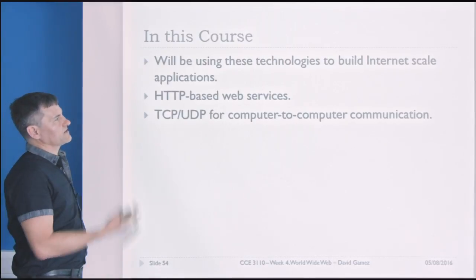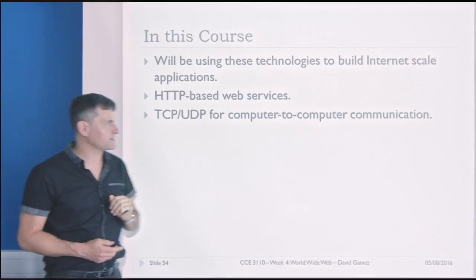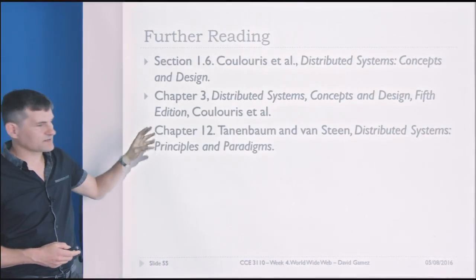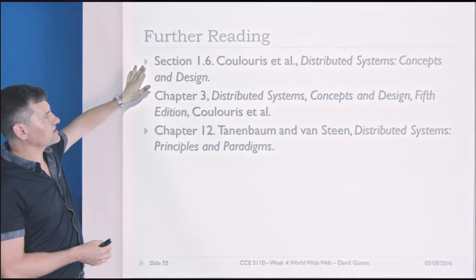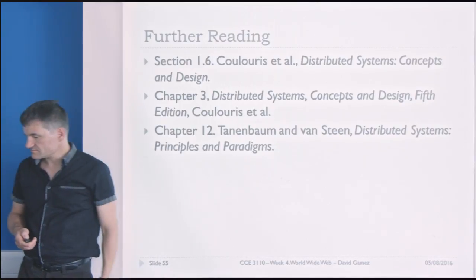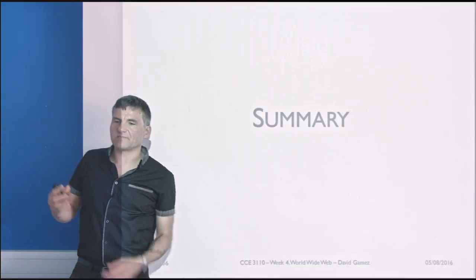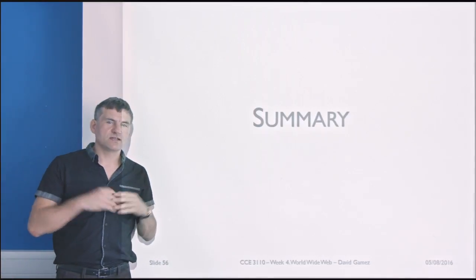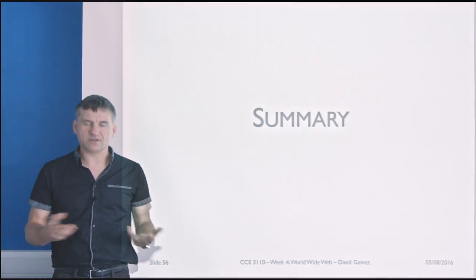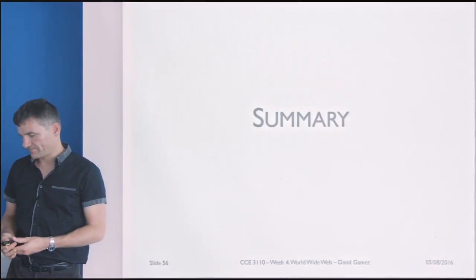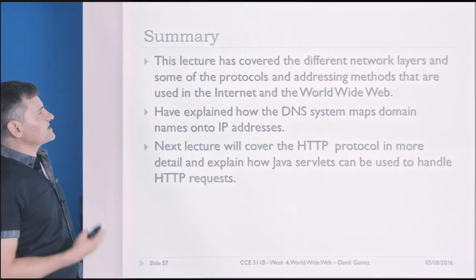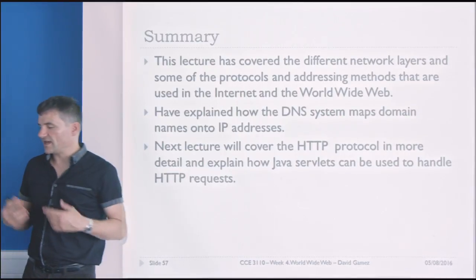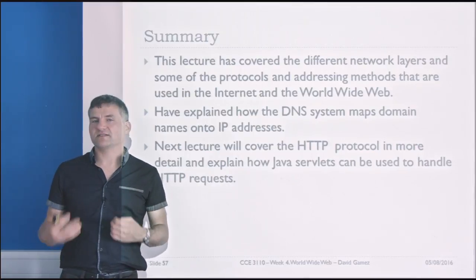This course is going to use these different technologies to build Internet scale applications — HTTP based web services, and TCP and UDP for computer-to-computer communication. There are extended treatments of this in the course books if it's not familiar to you. So that wraps it up. This has been a brief summary of some of the core network technologies which you're probably already familiar with, but I've given it to you just in case. The lecture covered different network layers, protocols and addressing methods used on the Internet and World Wide Web, and how the DNS system maps domain names onto IP addresses. Next lecture we'll go into the HTTP protocol in more detail and talk about how we can use Java servlets to handle HTTP requests.